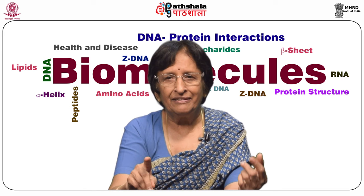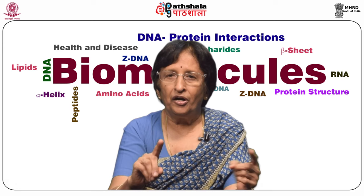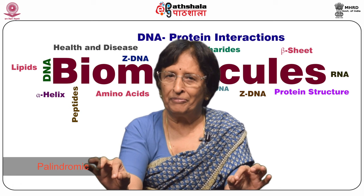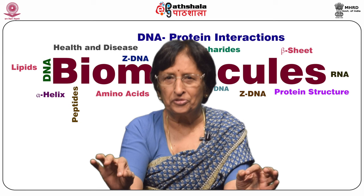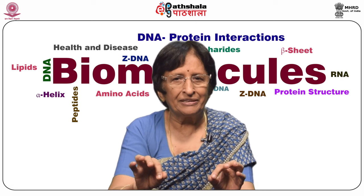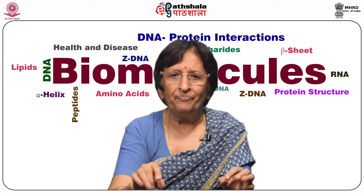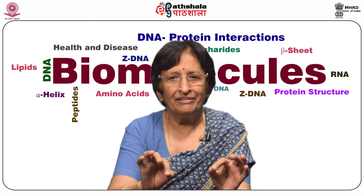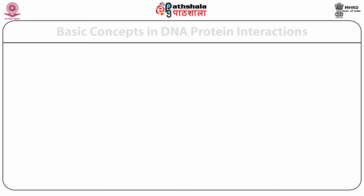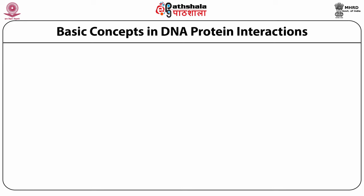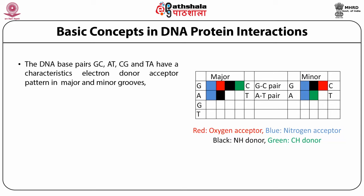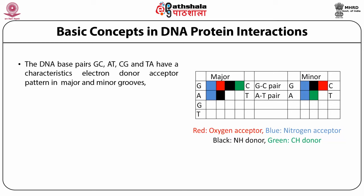The three 14-base pair regions that 434 repressor recognizes on the right-hand side of the operator are not perfectly palindromic; those on the left-hand side are close to it. The synthetic DNA sequence used by these authors was closest to the sequence of OL2 with only one difference — there was one inversion where AT was replaced by TA. Basic concepts in DNA-protein interaction: DNA base pairs GC, AT, CG and TA have characteristic electron donor-acceptor patterns in major and minor grooves.